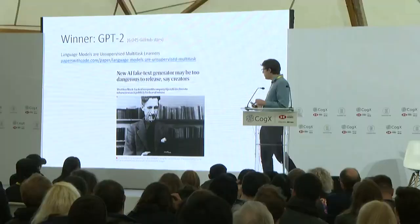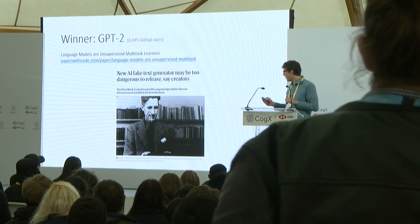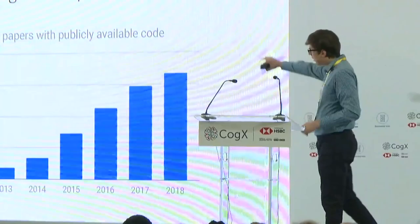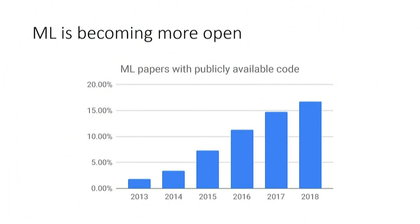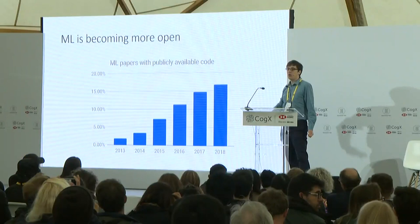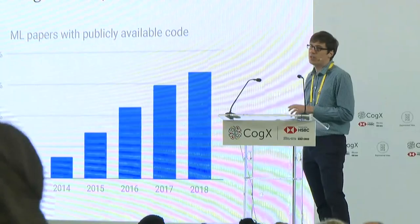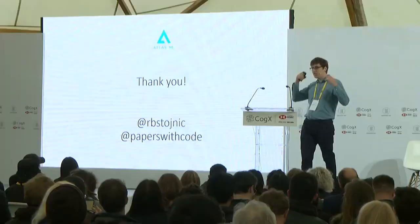You might also want to know, given this whole OpenAI thing, is the community actually getting more open or less open? Are we going as a community in the right direction? I have some good news: if we look at the percentage of machine learning papers that have code over time, that percentage in 2013 was just under 3%, and now last year it was more than 15%. So as a community, I think we're definitely going in the right direction. Obviously we're still off 100%, where I think every paper should have some sort of code, something you can try out, and all the data and models are published with it. But I think we're going in the right direction, and our mission as Atlas ML is to help and accelerate those developments.